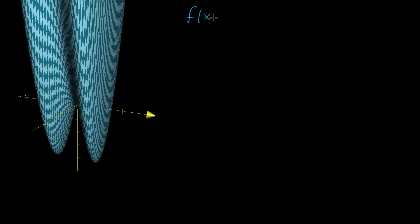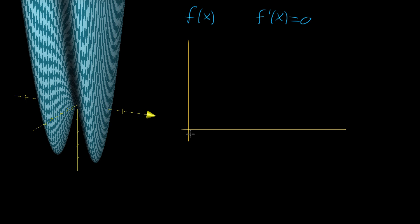In single variable calculus, if you have a function f of x and you want to find the maximum or the minimum of this function, what you do is you find its derivative and you set that equal to 0. Graphically, this has the interpretation that if you have the graph of f, setting its derivative equal to 0 means that you're looking for places where it's got a flat tangent line.